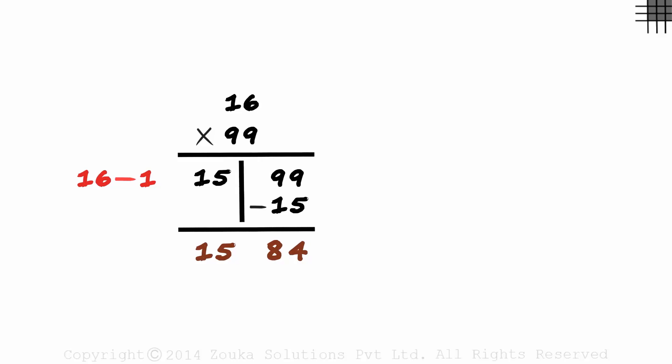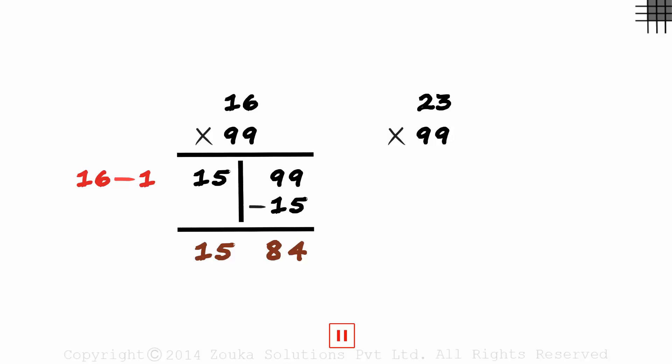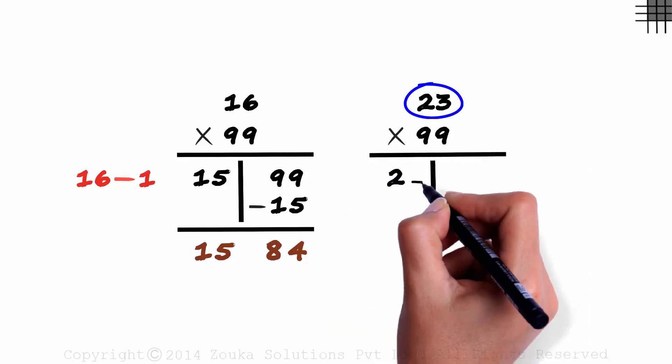Here's another one. Twenty-three times ninety-nine. Give it a try. We make a partition. Twenty-three minus one is twenty-two.